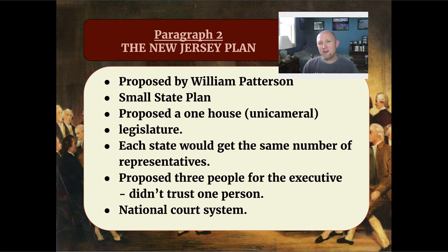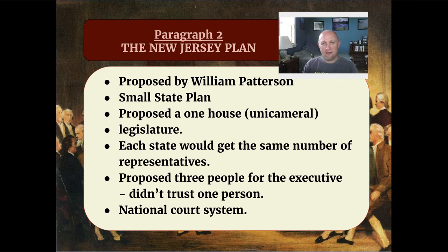They also did not trust one person to be in charge of an executive, so they wanted a three-person executive branch. How that would have worked practically, we do not know, because as you probably know, this did not become part of the Constitution. And the one similarity was that both the Virginia Plan and the New Jersey Plan wanted a federal court system, which did not exist under the Articles of Confederation.